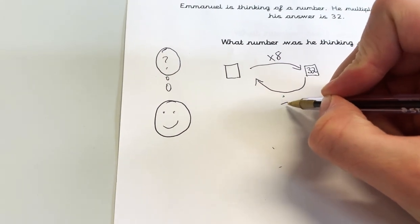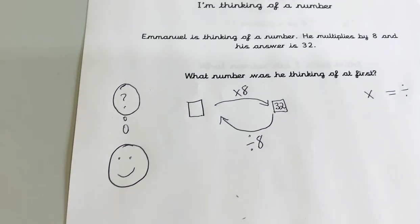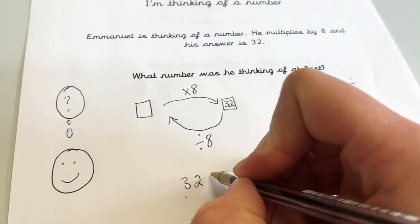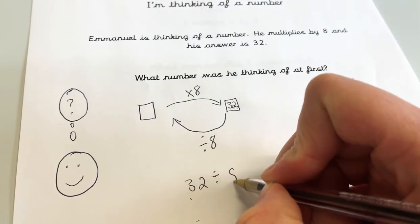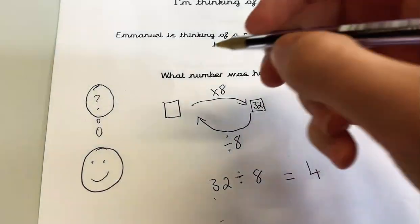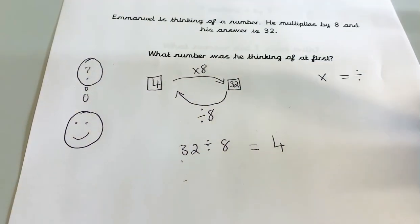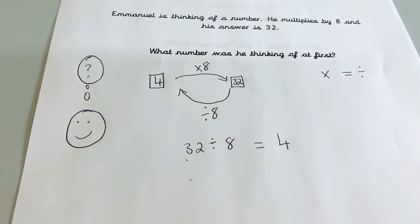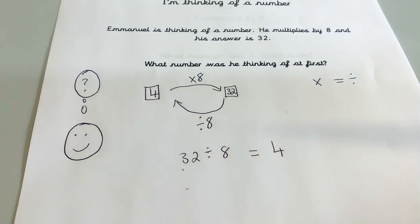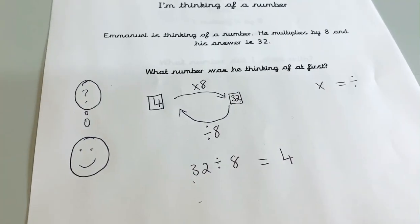Instead of multiplying by 8, I'm going to divide 32 by 8. So 32 divided by 8 is equal to 4. Let's check if we're right: 4 multiplied by 8 gives me 32. So I'm right. 4 is the number that Emmanuel was thinking of.